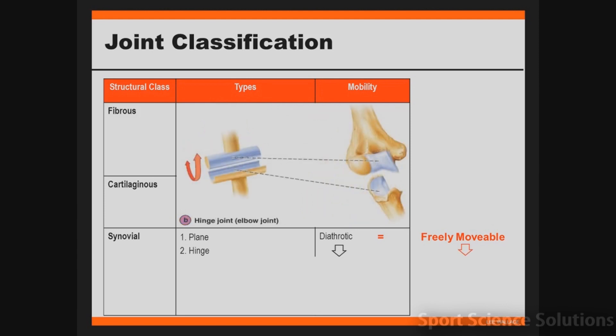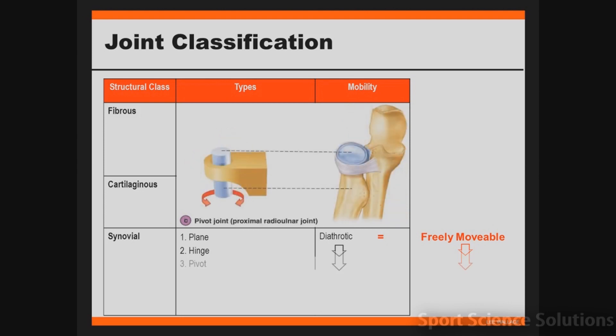The second type of synovial joint is called a hinge joint. The example shown here is the elbow. All hinge joints are classified as a bone which wraps around a cylinder-type shape of another bone. The third type of synovial joint is a pivot joint. Pivot joints look like a spherical bone with a ligament that wraps around the head of the cylinder, allowing a pivot-type action. The example shown is the proximal radioulnar joint occurring in the forearm.